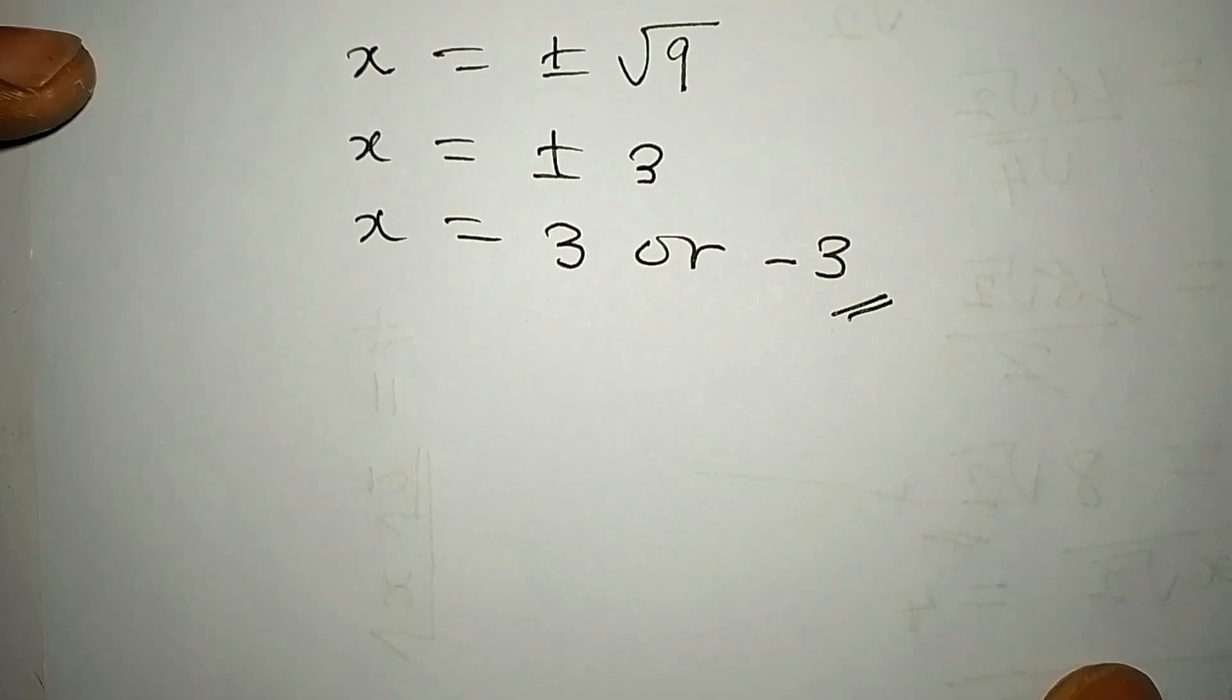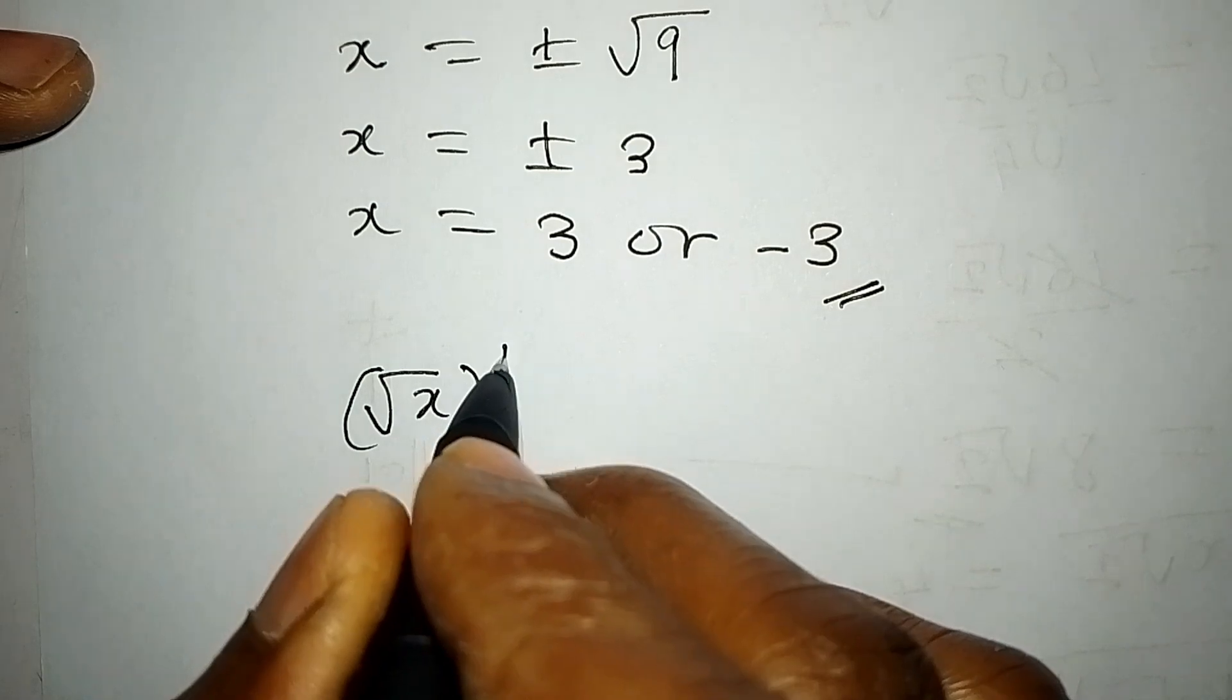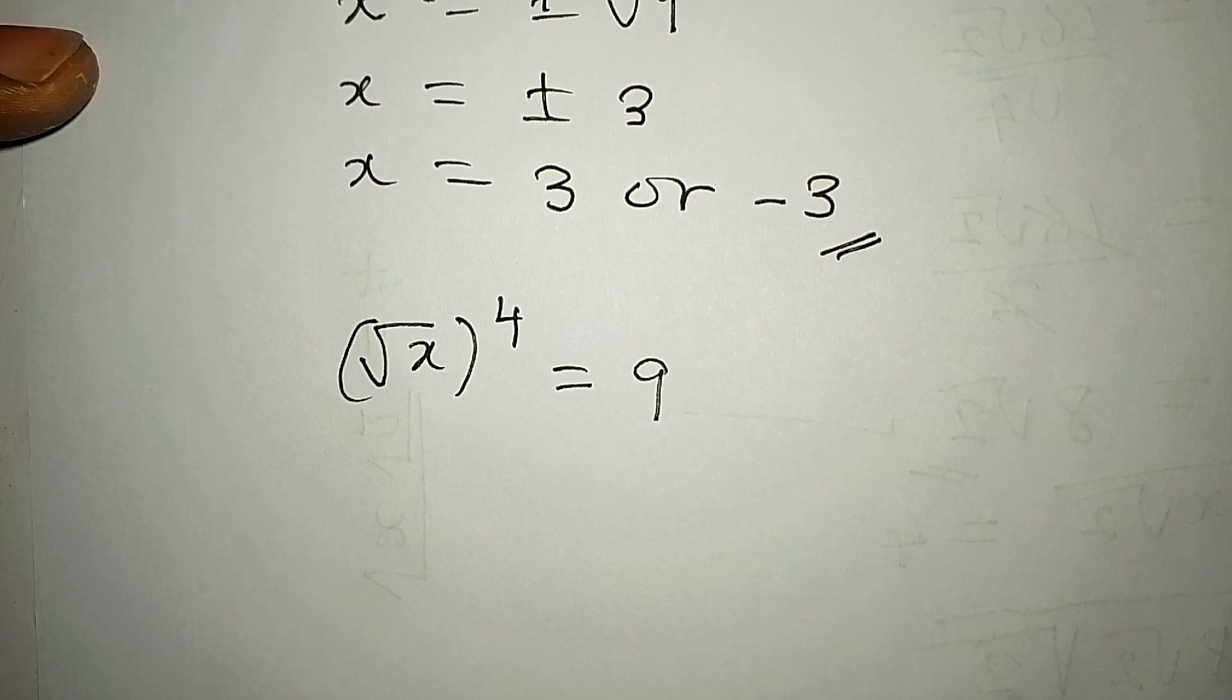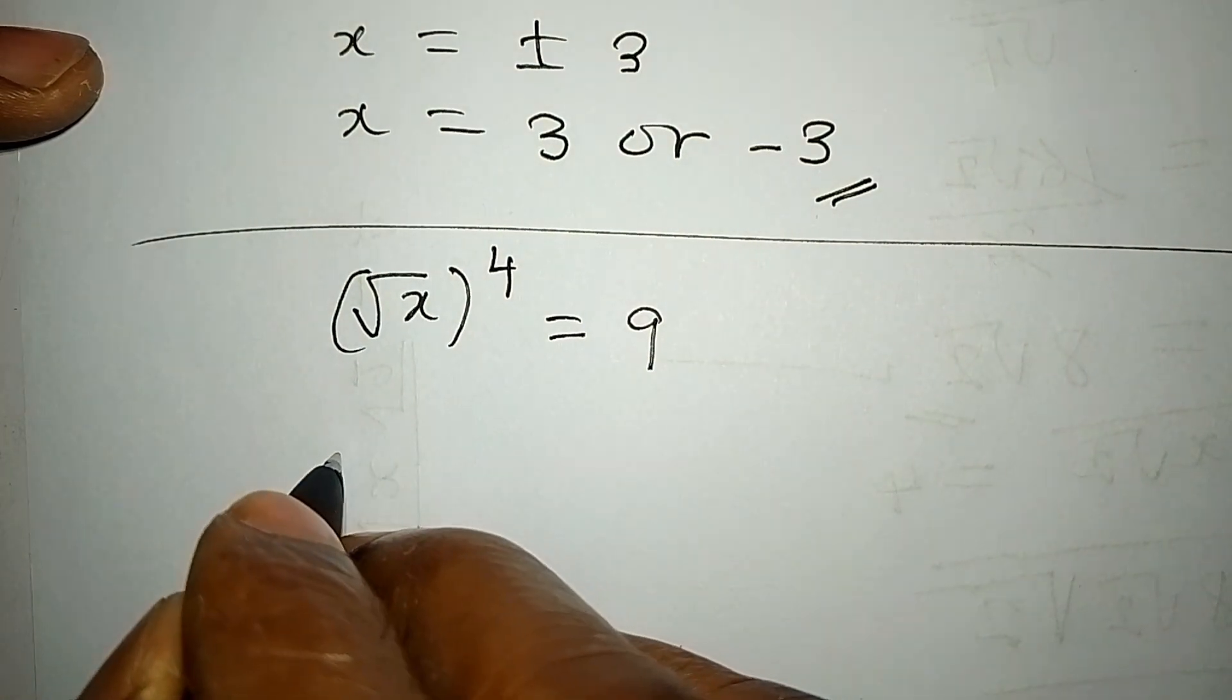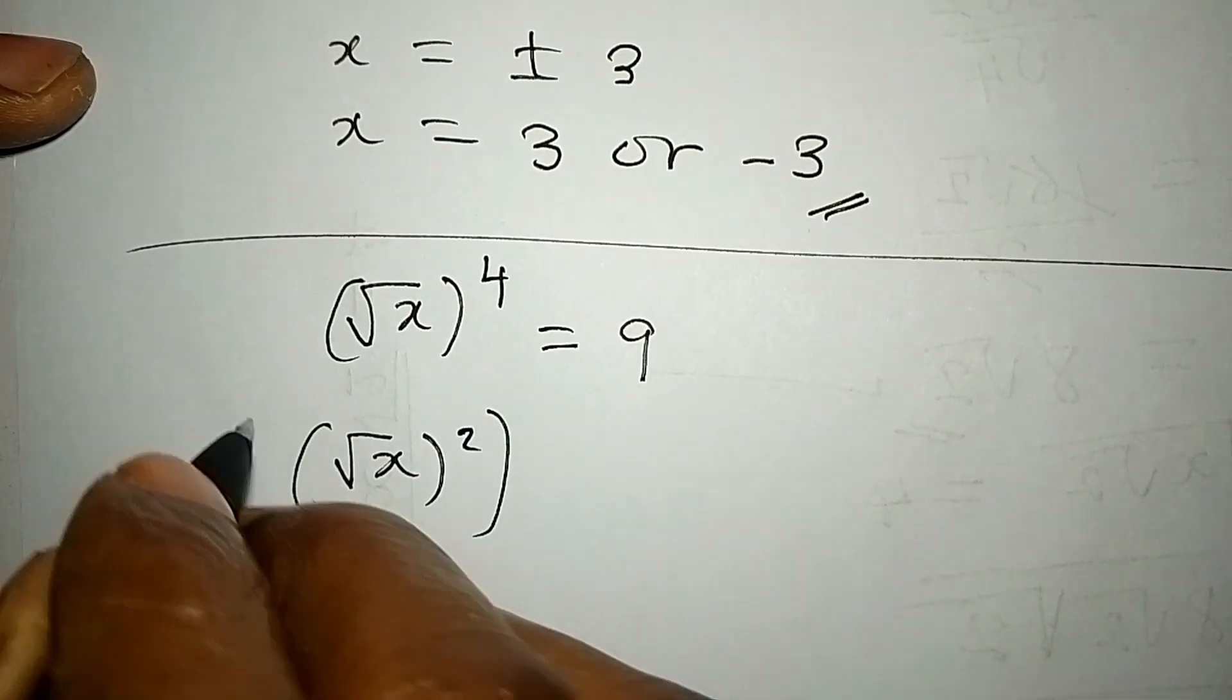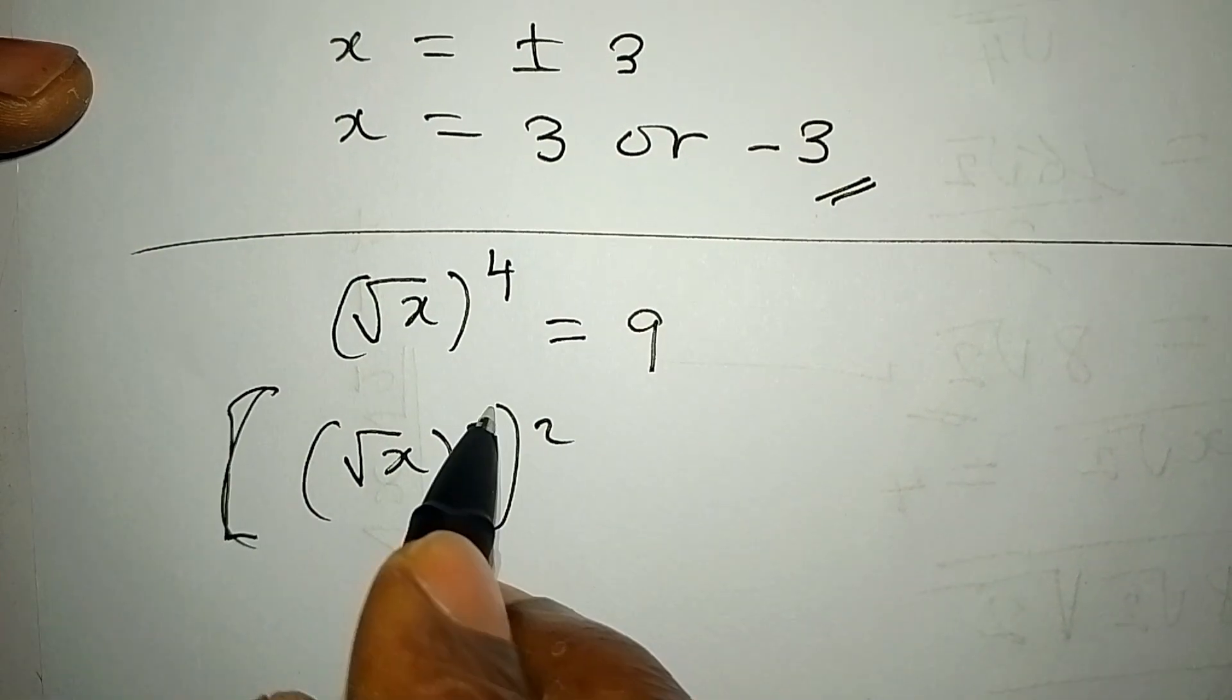But then let's look at this problem again: square root of x to the power of four equals nine. Now what if we don't want to do it this way? Let's look at another method. We have square root of x to the power of two, to the power of two. Okay, let me change this bracket.